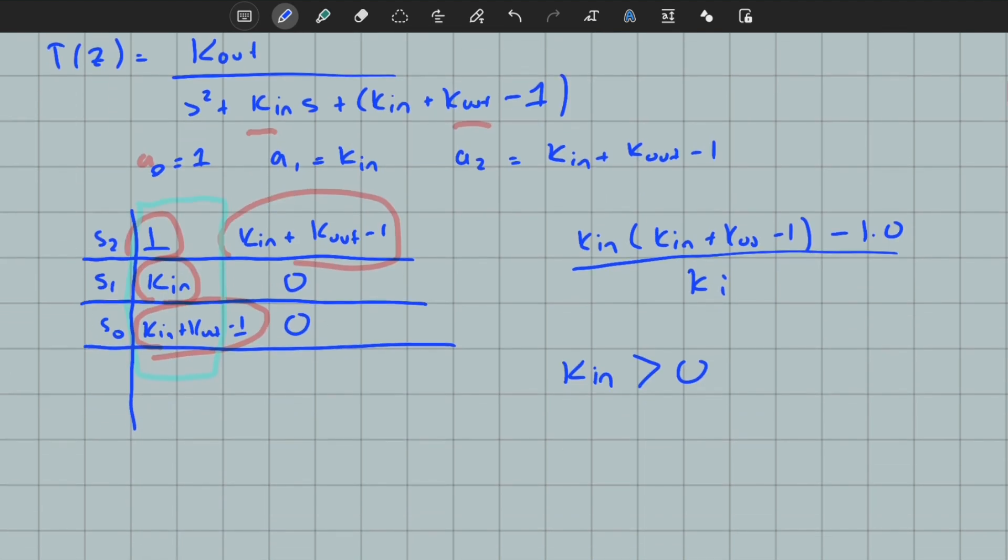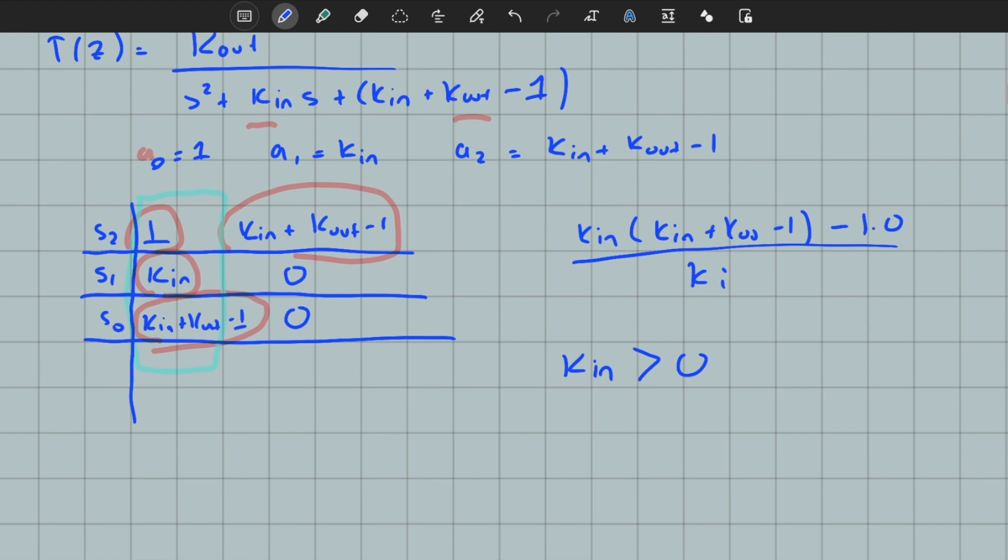of the inner loop, should be greater than 0. In the second case, we know that k_in plus k_out minus 1 should be greater than 0. Let's write it from the perspective of k_out: k_out should be greater than minus k_in plus 1.